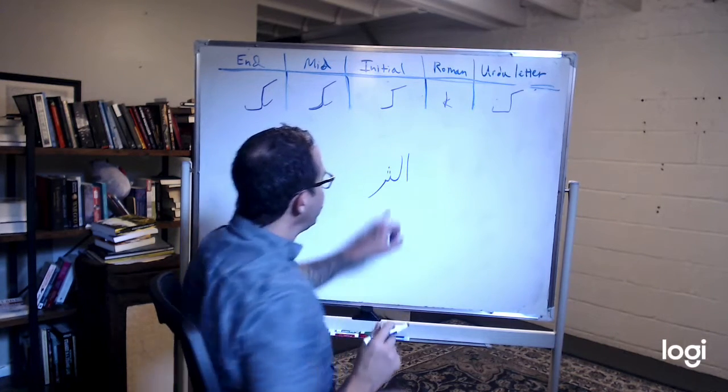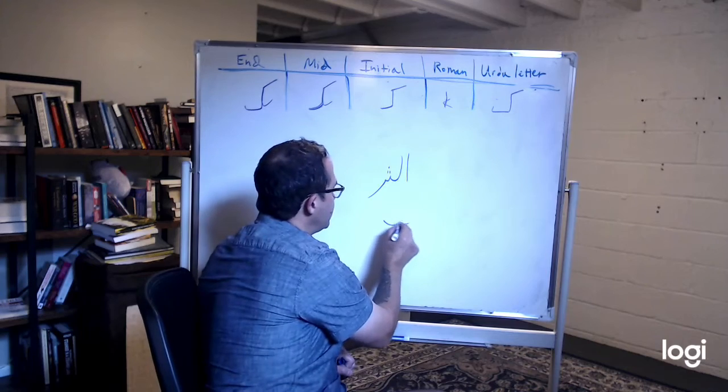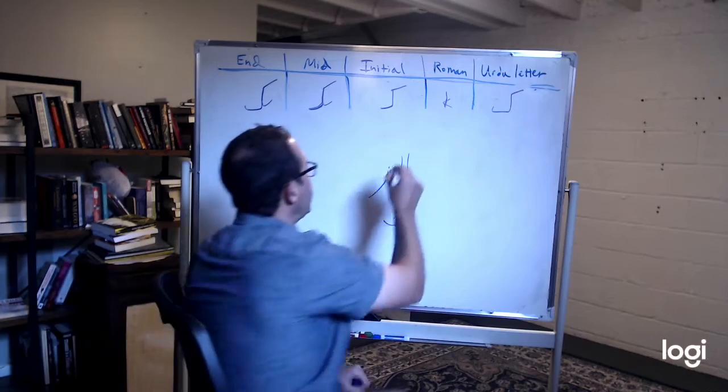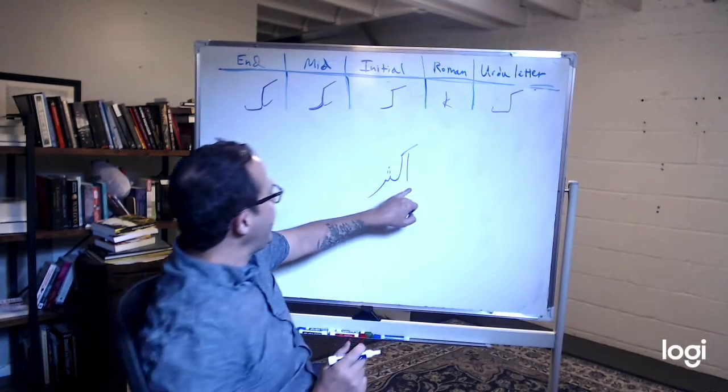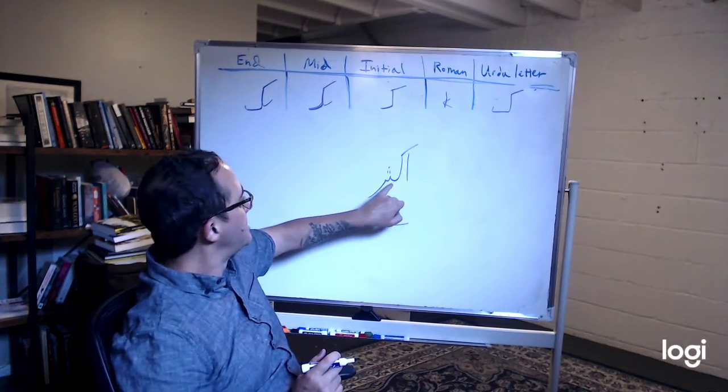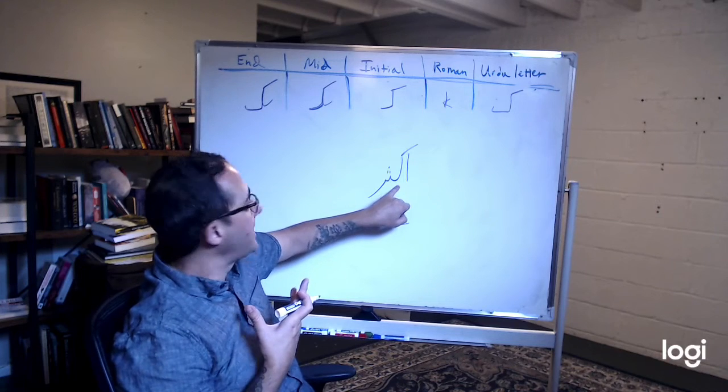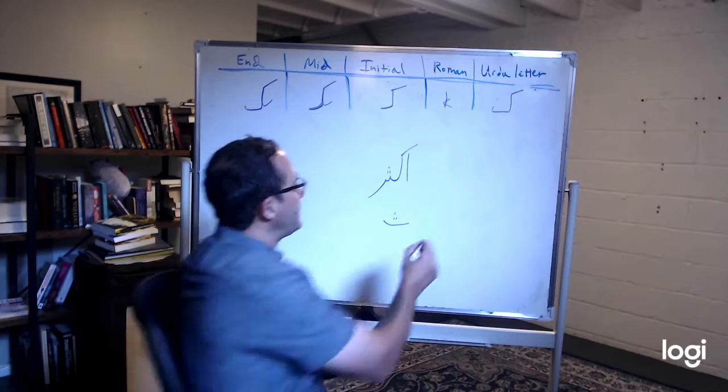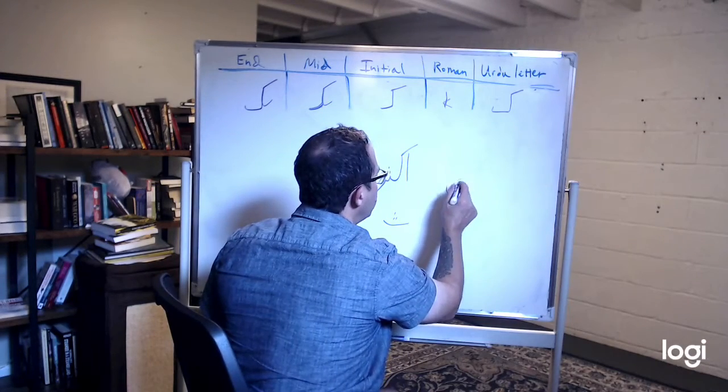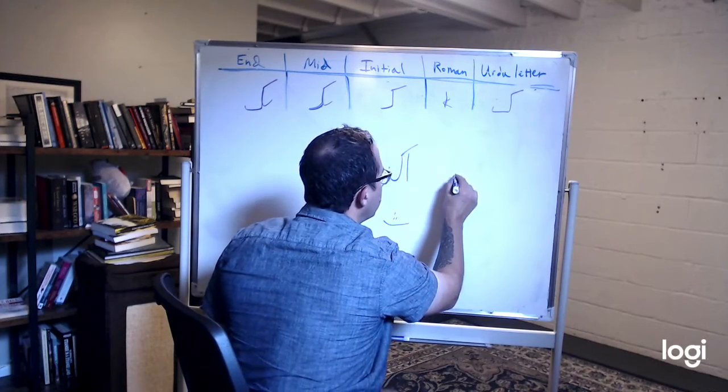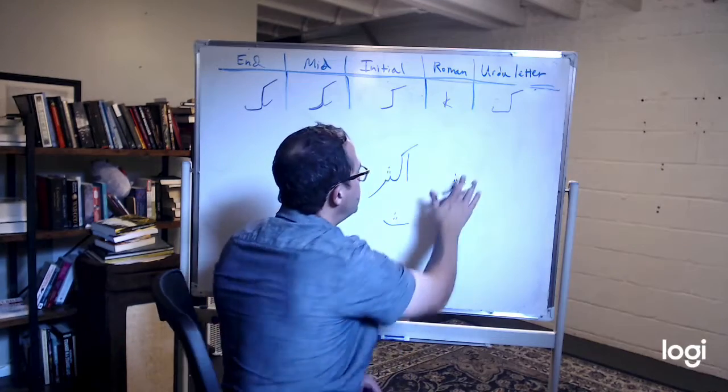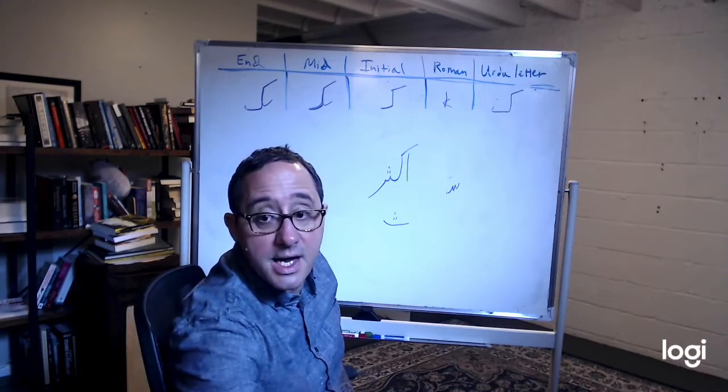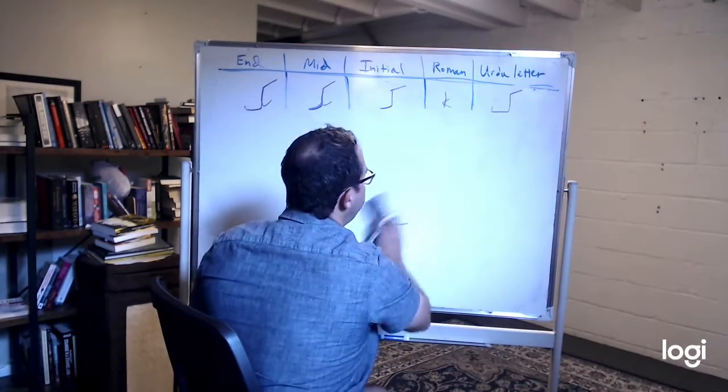You're finally going to meet this S. We usually have this S in words, but here it is right here: aksar. Aksar. Not this - this is sha, this is sa, but this is also sa. Aksar. Agar, agar, agar - if, if.